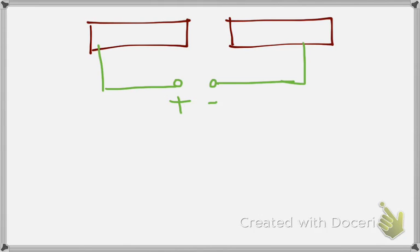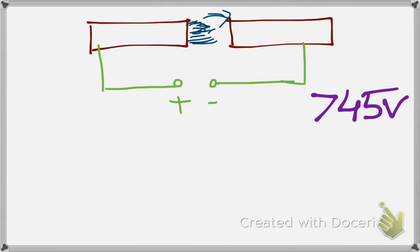As these two electrodes are subjected to DC supply of most of the times greater than 45 volts, from the positive electrode, carbon particles keep moving and they get deposited on the negative electrode.